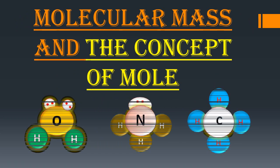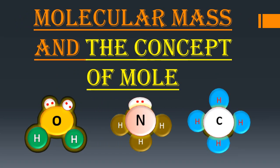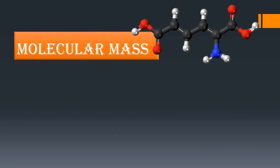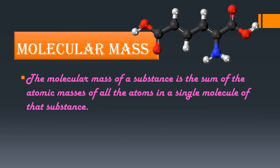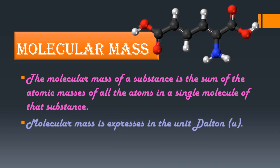Our next topic is molecular mass and the concept of mole. The molecular mass of a substance is the sum of atomic masses of all the atoms in a single molecule of that substance. For example, in a water molecule, it is the sum of the atomic masses of hydrogen and oxygen atoms. Molecular mass is expressed in the unit dalton (u), where 1 u = 1.6605390 × 10⁻²⁷ kg.